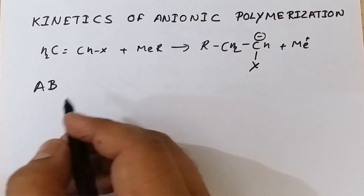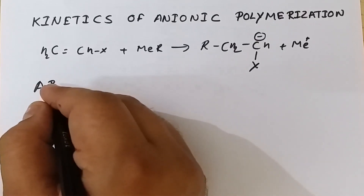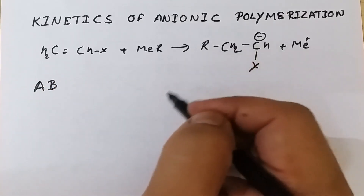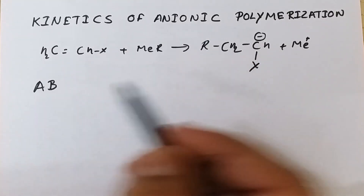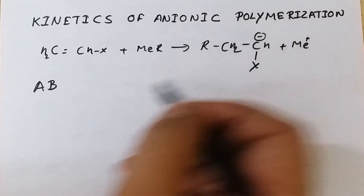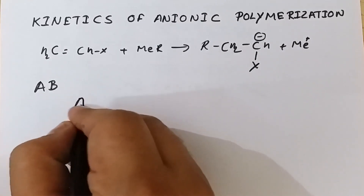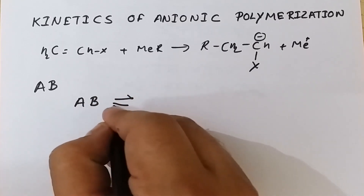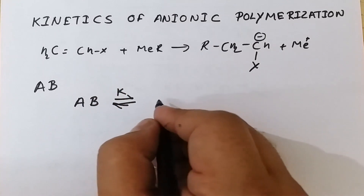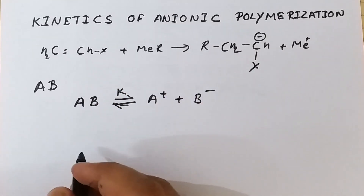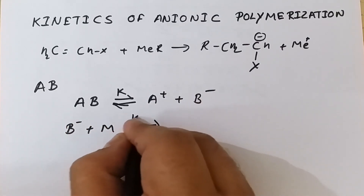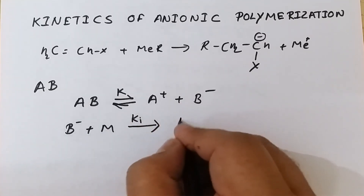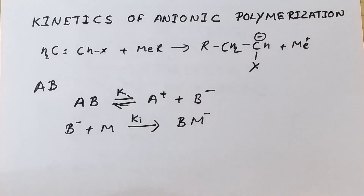AB dissociates into A⁺ and B⁻ ions. First, we see the dissociation of the catalyst, then formation of the active center on the monomer, then the propagation step, and then the termination step, wherein termination is carried out by adding a proton donating agent. The proton is added and termination of the propagating chain takes place. In the first step, k is the dissociation constant and the catalyst dissociates to form A⁺ and B⁻. In the second step, B⁻ reacts with the monomer with rate constant kᵢ, and the negative charge is transferred to the monomer, forming the active center.